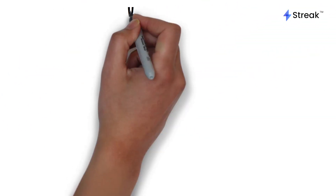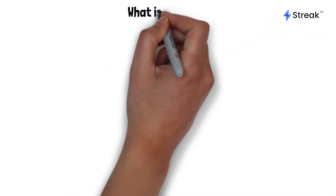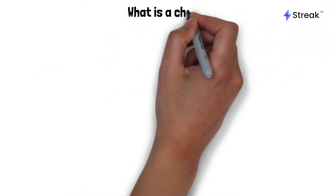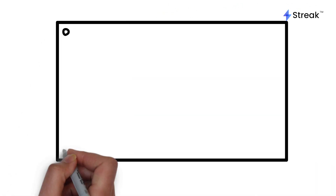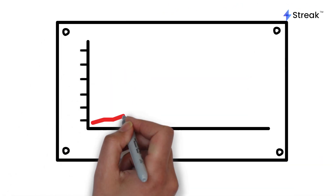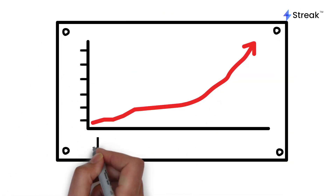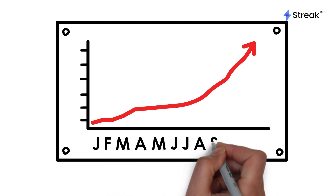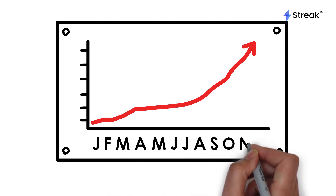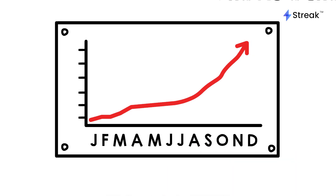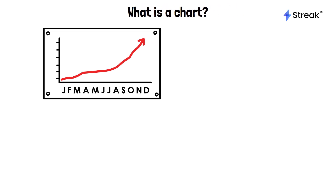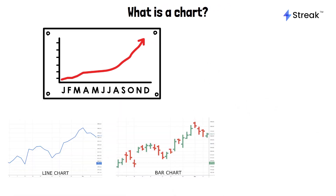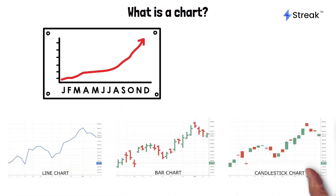Now we'll look at what a chart is. A chart is a visual representation of historical data, such as price movements and trading volume. There are various types of charts that traders can use, including line charts, bar charts, and candlestick charts.